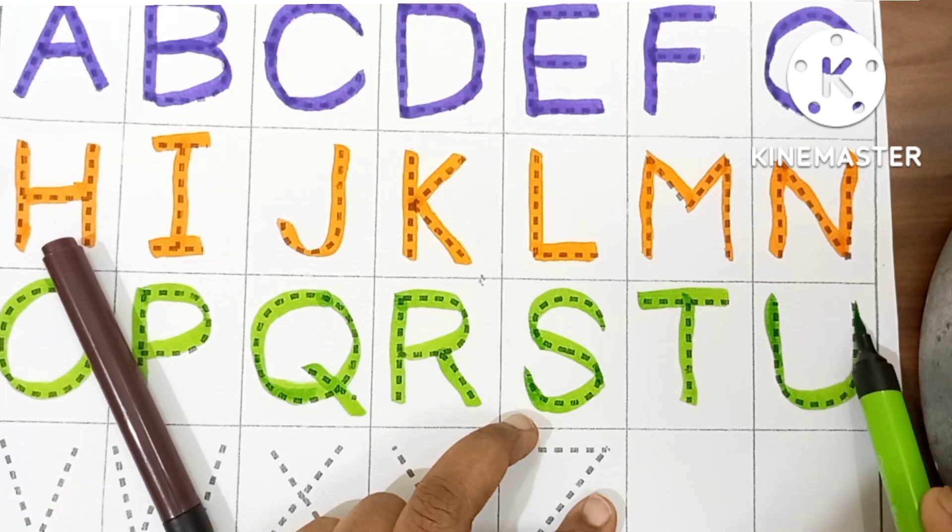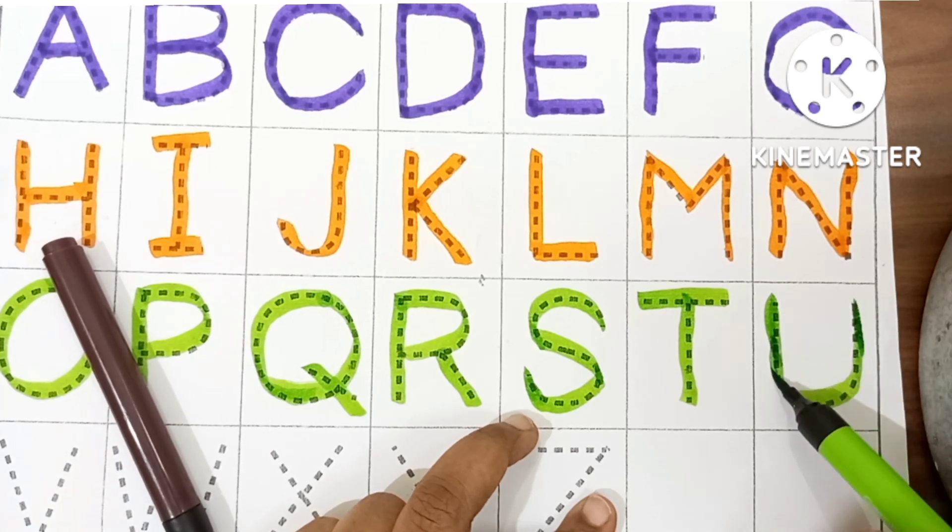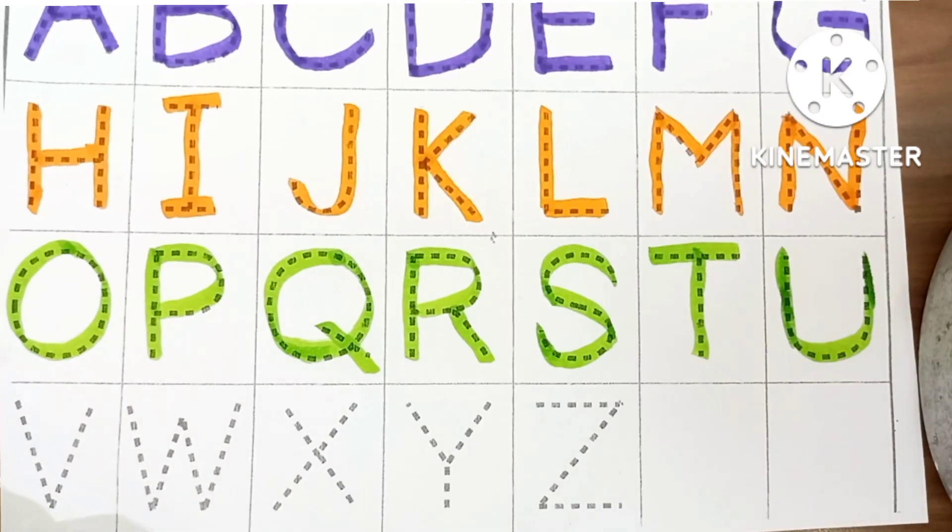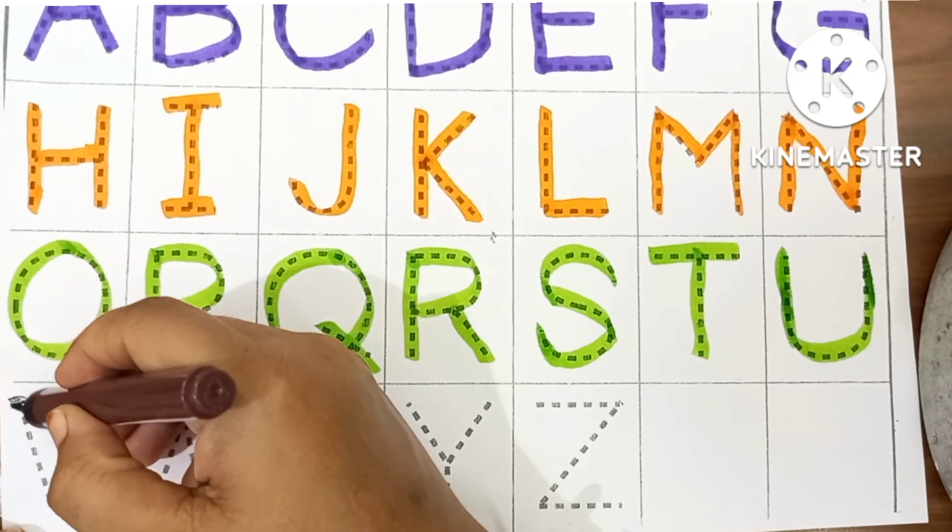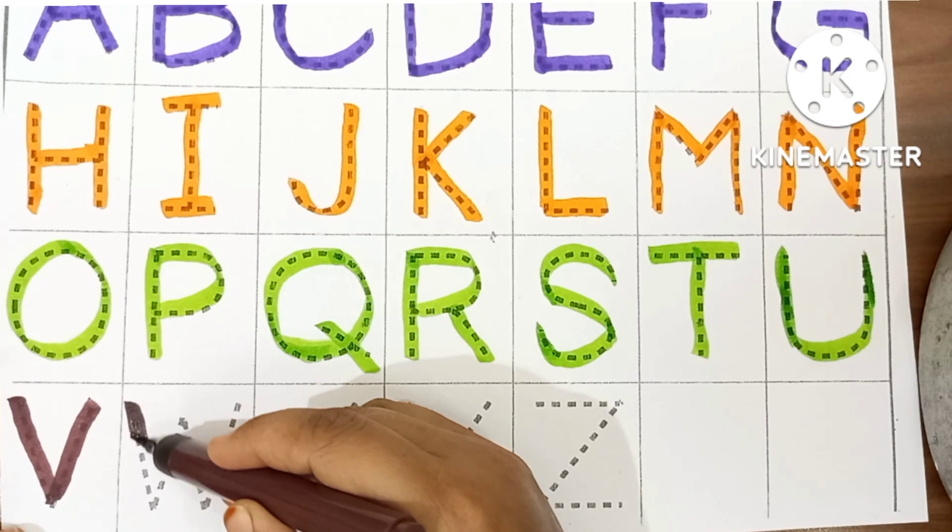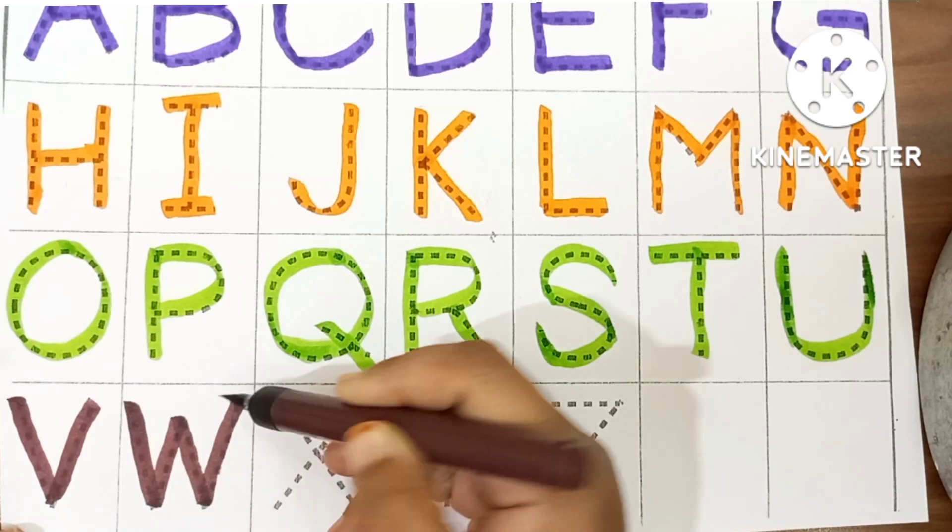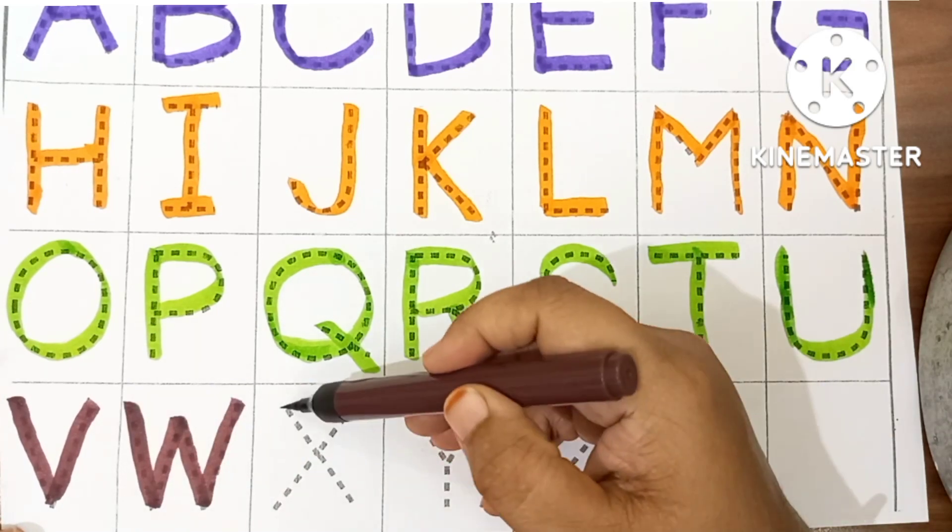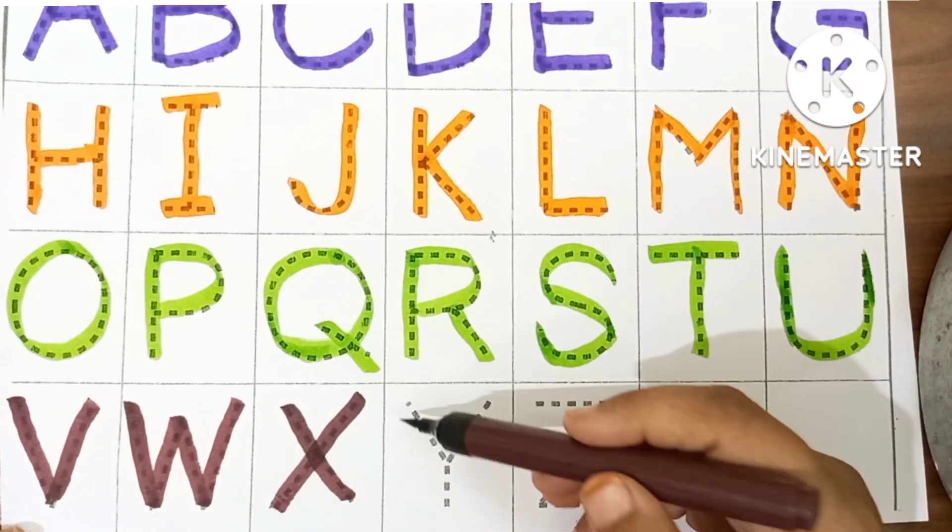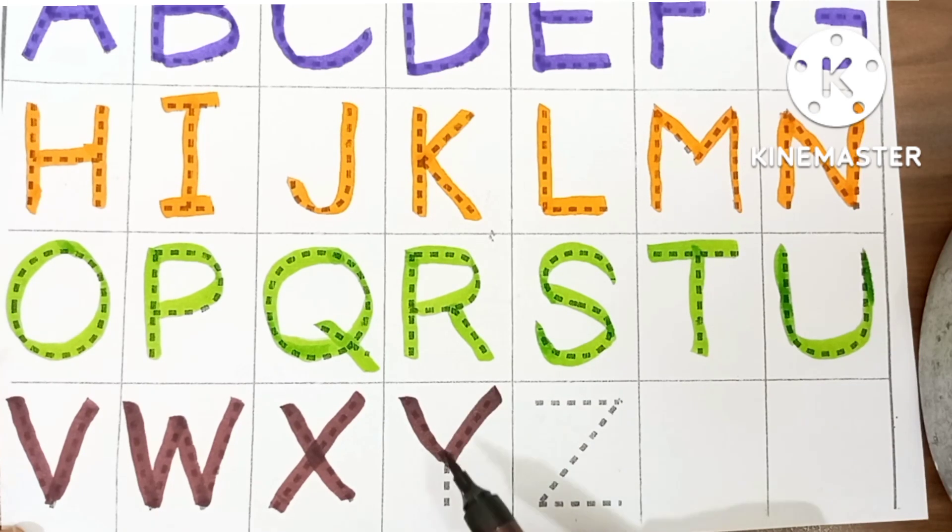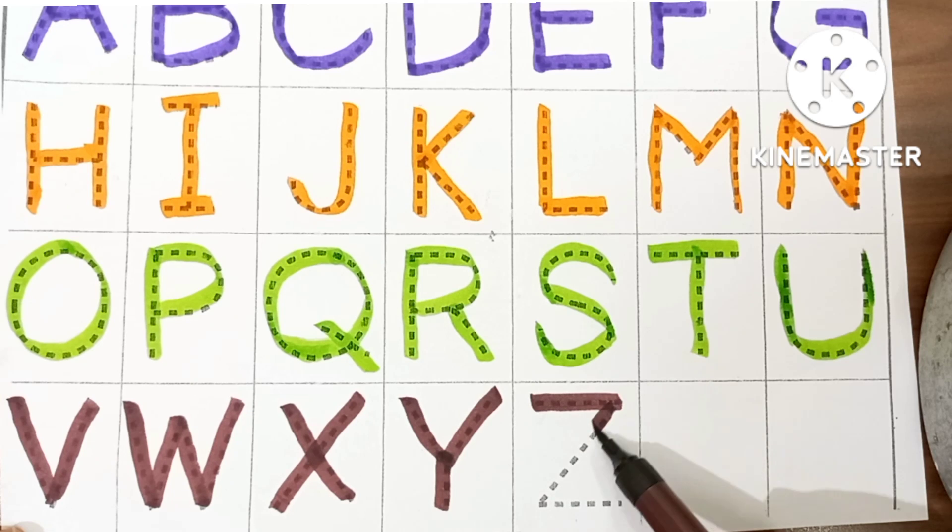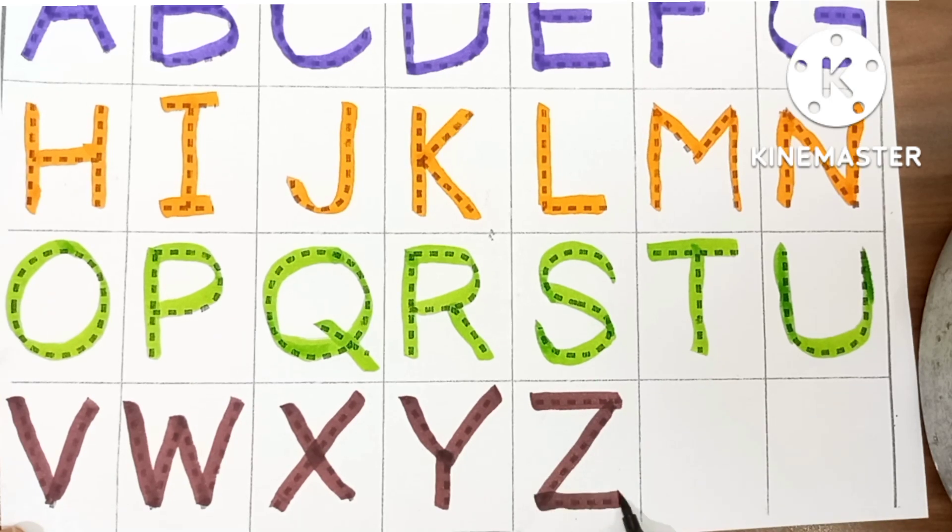Brown color. V. V for Violin. W. W for Wheel. X. X for Xylophone. Y. Y for Yak. Z. Z for Zoo.